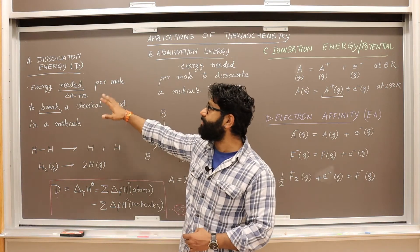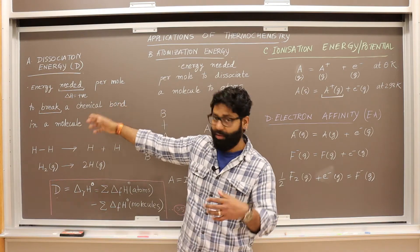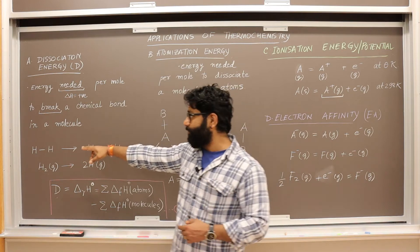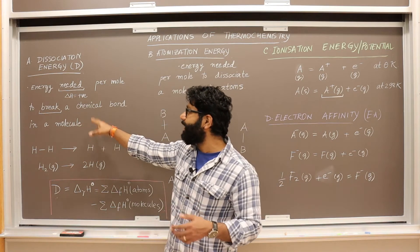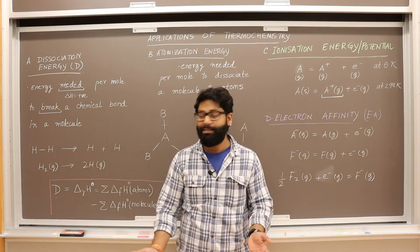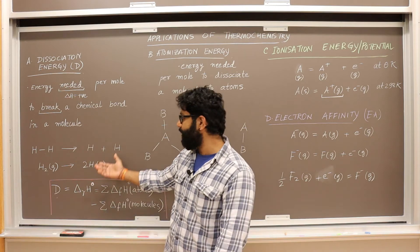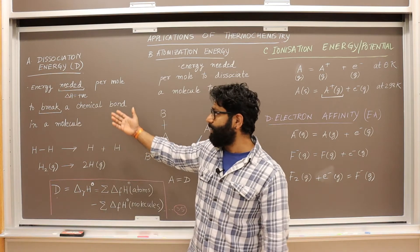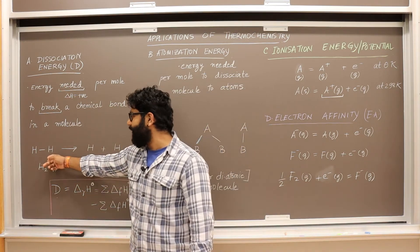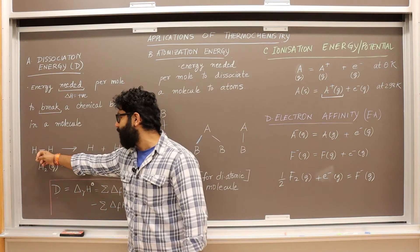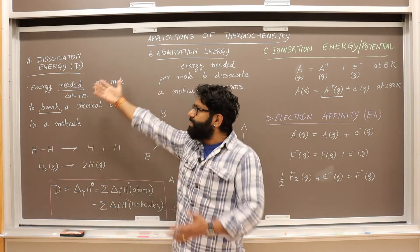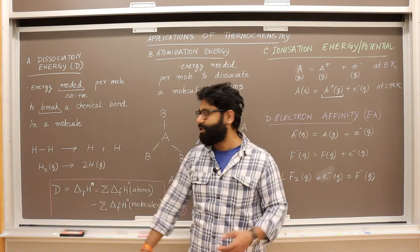So it is very simple. It's the energy needed per mole of the molecule to break a chemical bond in a molecule — that is basically the dissociation energy. You have a hydrogen molecule, you break this bond, and the amount of energy needed to break that bond is basically the dissociation energy.